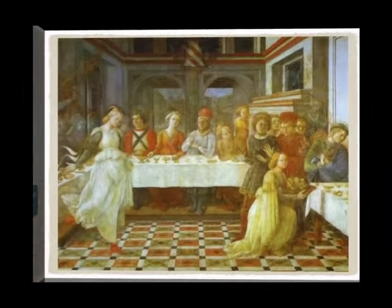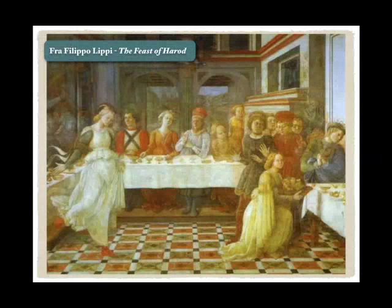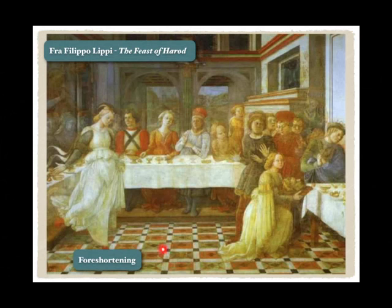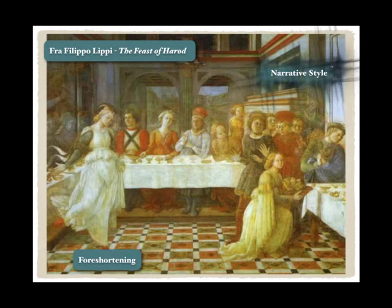Next we have a painting by Fra Filippo Lippi giving us the Feast of Herod. Fra Filippo Lippi is using a cool little tactic called foreshortening. With foreshortening, he's using the horseshoe pattern of the table here in order to give us a feeling of depth, something that the medieval period was unable to accomplish. He also uses foreshortening on the tiles, making them larger in the front and smaller in the back, giving us the feeling that it is moving backward and giving us three dimensions.